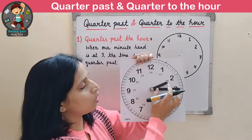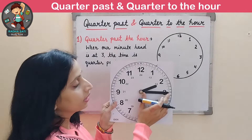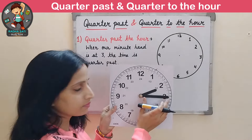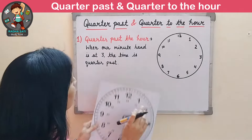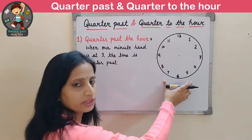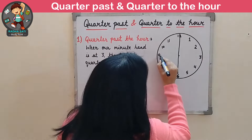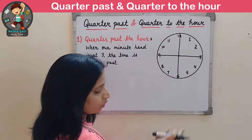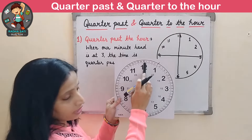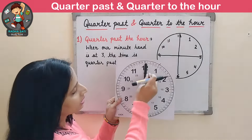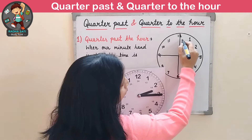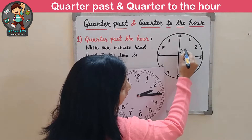Now, the concept is quarter past. Whenever the minute hand — this longer one — is at 3, the time will be quarter past. You know why we call it quarter past? Because this clock has two halves, or in the form of quarters, it has four quarters. The minute hand has passed one quarter, from 12 to 3. That's why we call it quarter past.